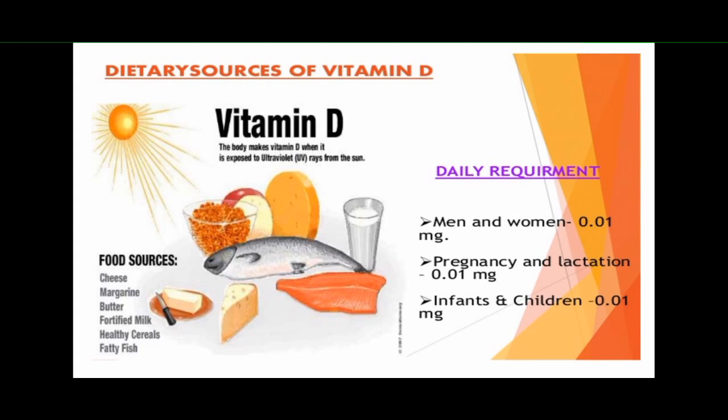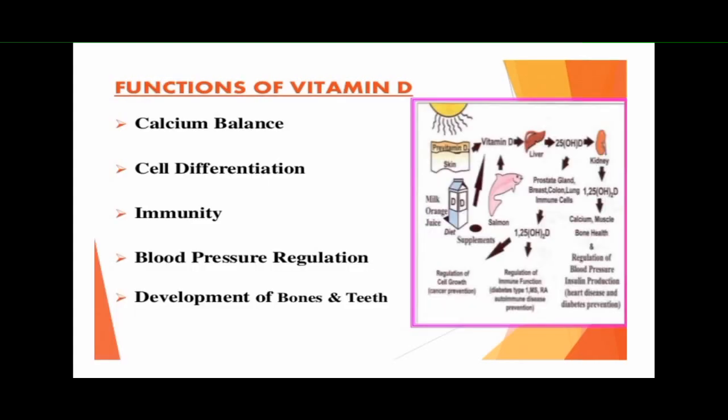Exposure of skin to sunlight is also a natural source of vitamin D. Calcitriol is the biologically active form of vitamin D, which regulates plasma levels of calcium and phosphate. Calcitriol acts at three different levels to maintain plasma calcium levels: it acts on the intestine, on bone formation, and on the kidney.